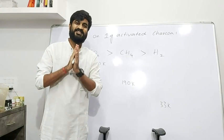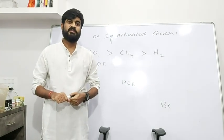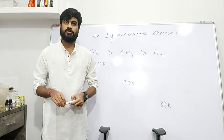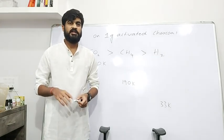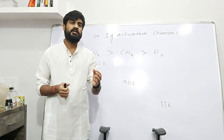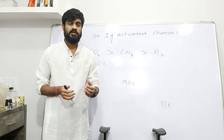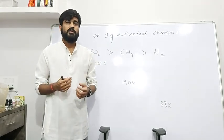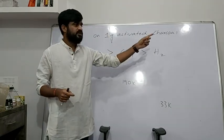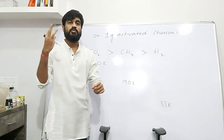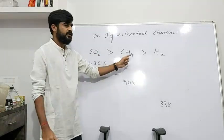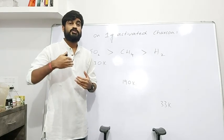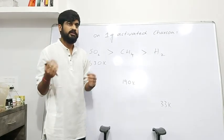Hello, Namaskara. Surface chemistry theory. Last class, we discussed that easily liquefable gases are readily adsorbed. Those gases which are easily liquefable show more adsorption. On 1 gram of activated charcoal as adsorbent, there are gases: sulfur dioxide, methane, and hydrogen. These gases show adsorption in a certain order.